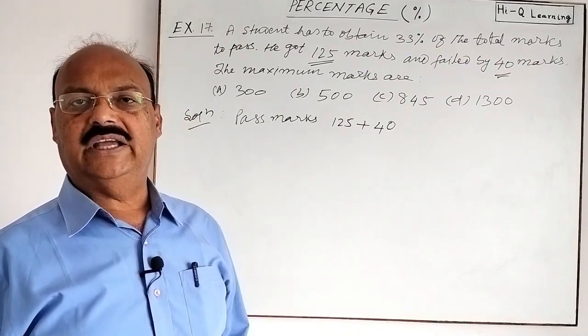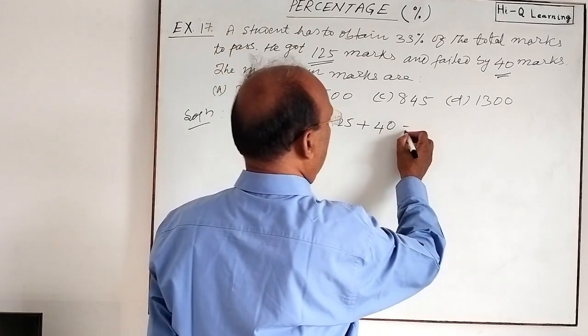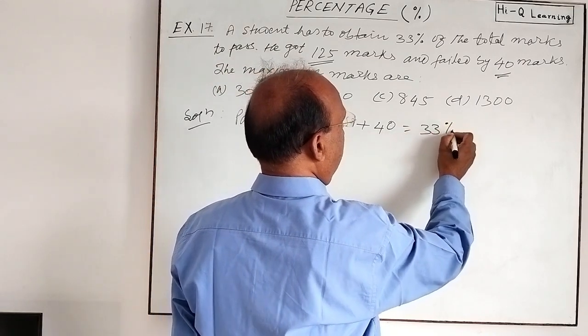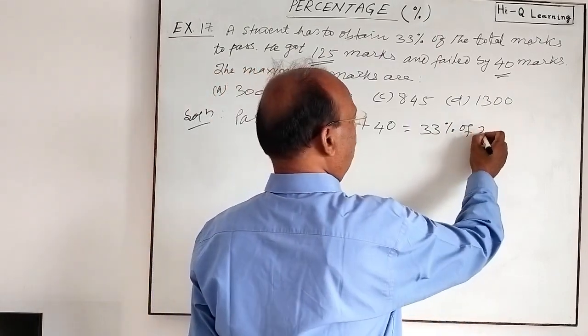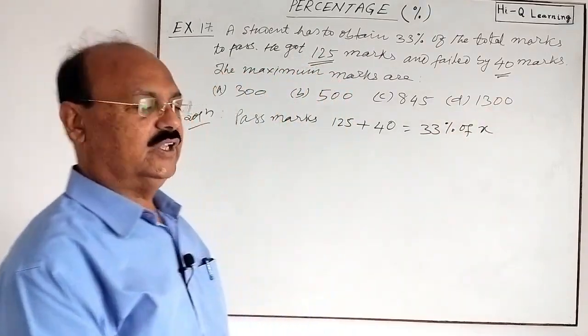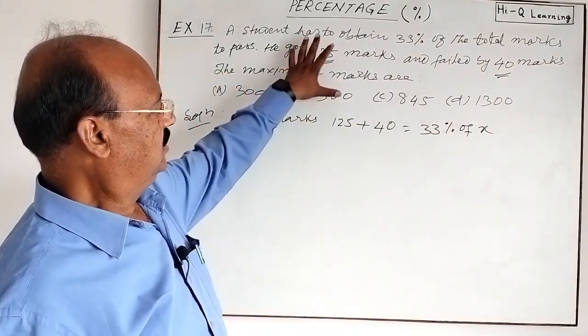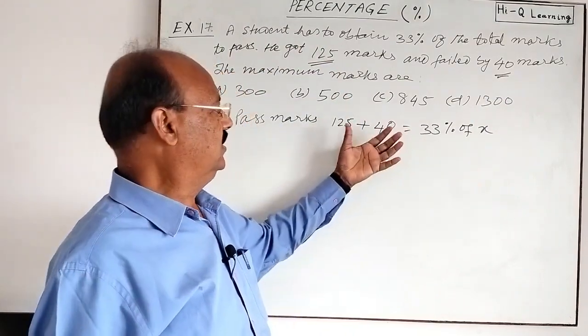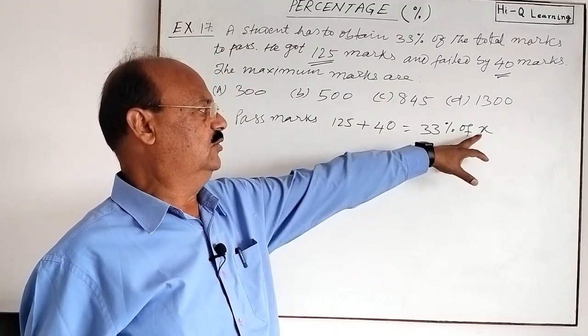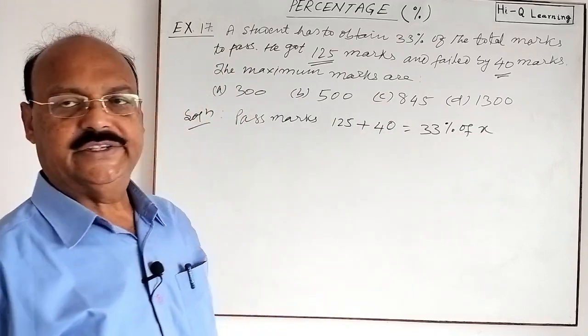We have to find out total marks here and we will suppose that total marks is x, that we will evaluate. So this is equal to pass marks. Pass marks is 33 percent of total marks and we are assuming here total marks is x. So you see this question has been reduced in a very simple form and by solving this expression we can get the value of x very easily.